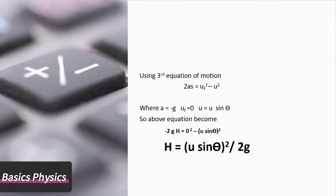Using the third equation of motion: 2as = uf² - u². Where a = -g, uf is the final velocity, which is zero when the body reaches maximum height, and u becomes equal to U sin θ. Putting values in the above equation, we get height of projectile: H = U² sin² θ / 2g.